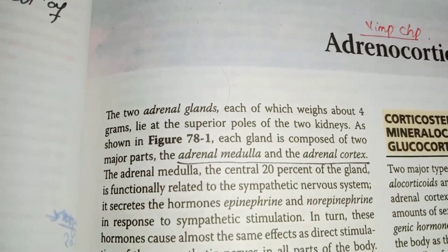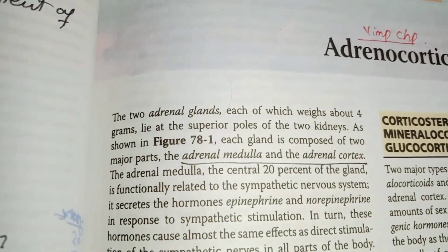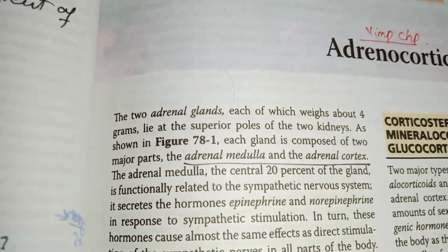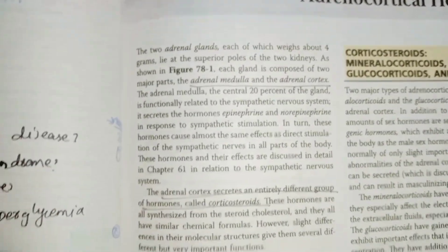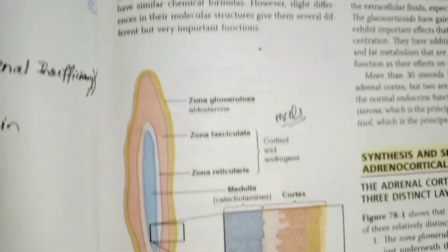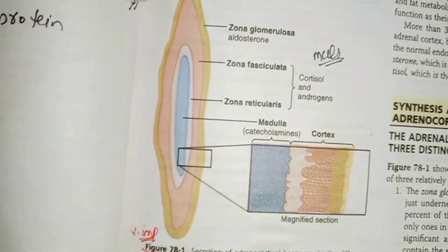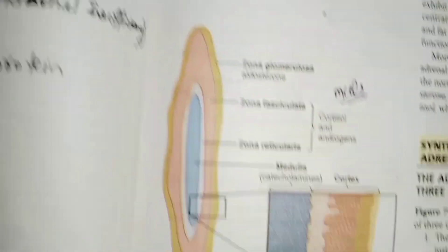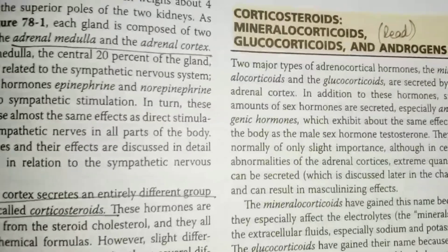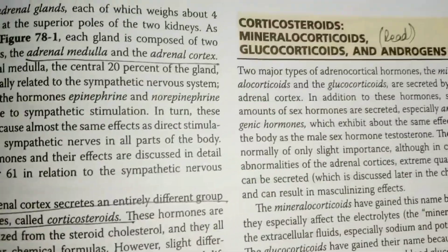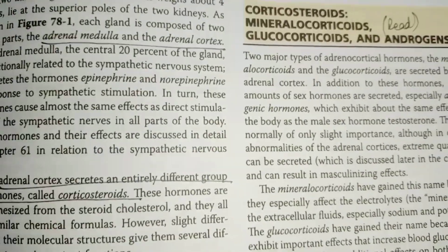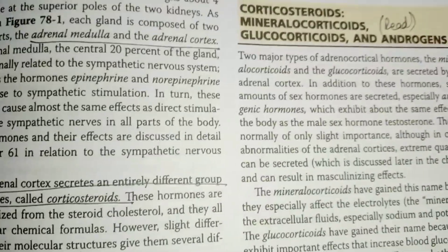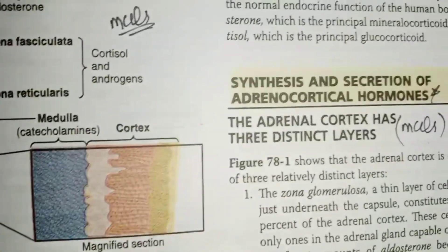There is an important thing to note. When we start the chapter, we will read the first page. All the MCQs are based on which layer hormones are released from. You will know which amino acids and mineralocorticoids are released, and which androgens are released from the endocrine gland. We need the synthesis and secretions from the MCQs.